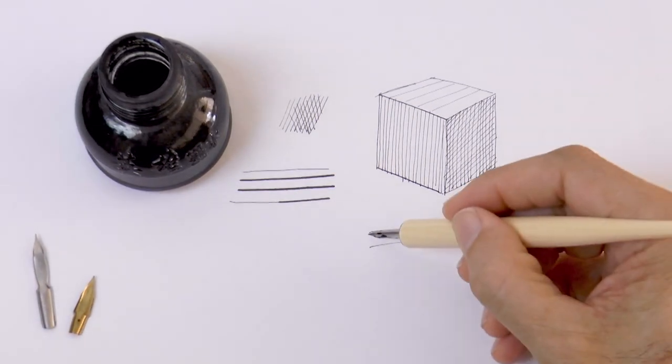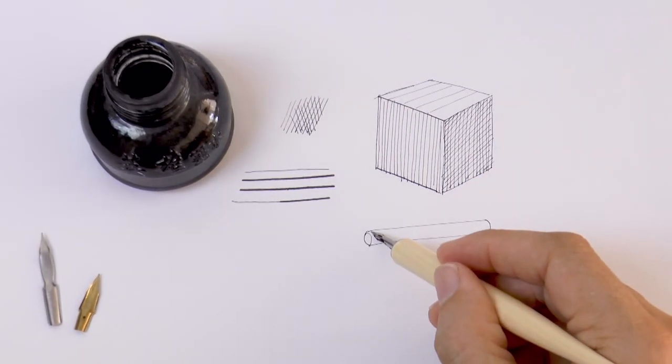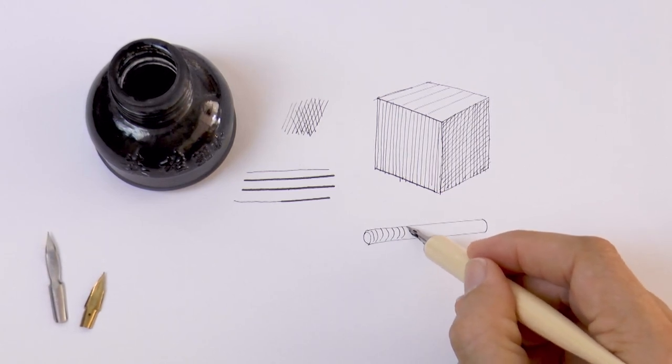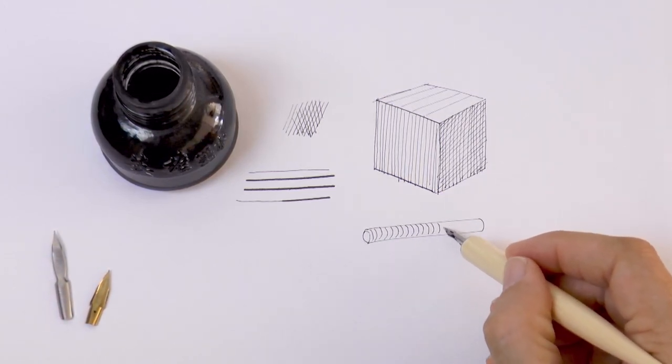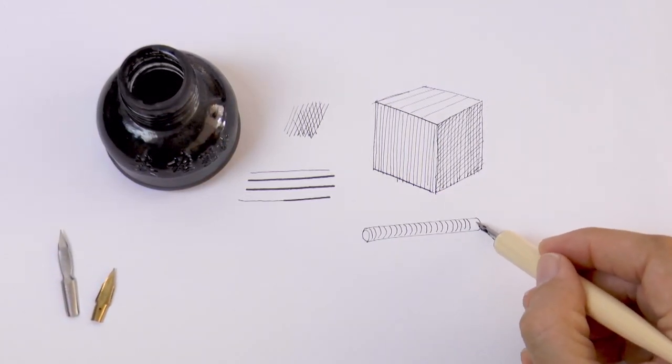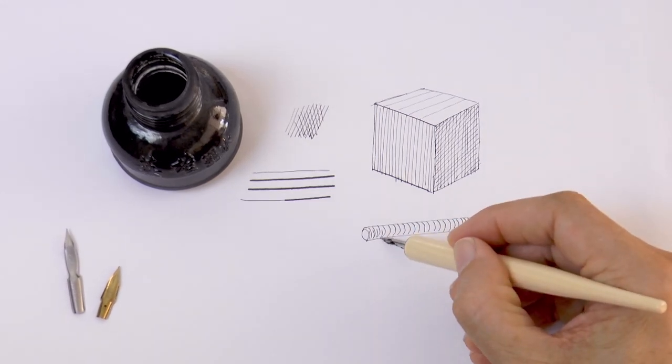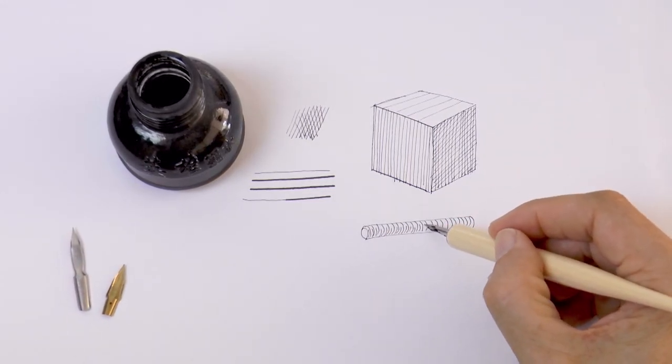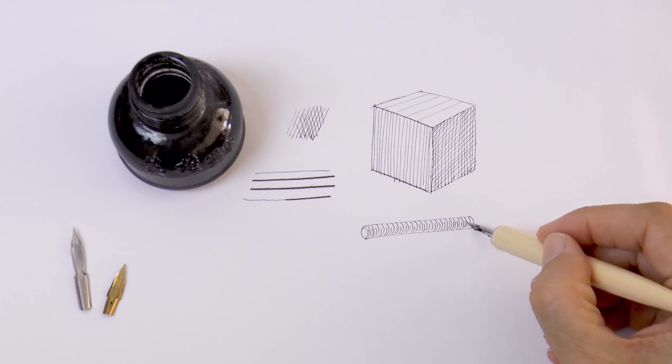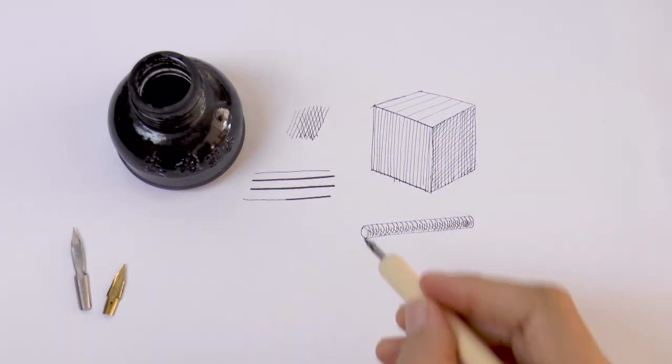You already knew that I am sure. When we shade a rounded surface, we can follow that shape to indicate it better. I'll make some shorter ones in the area of shade to darken it, and of course we can cross lines in other directions as well.